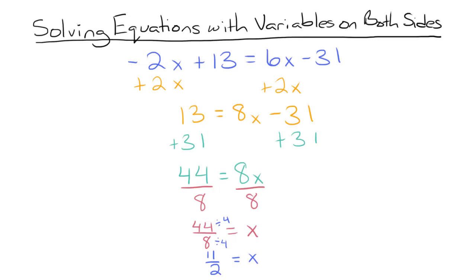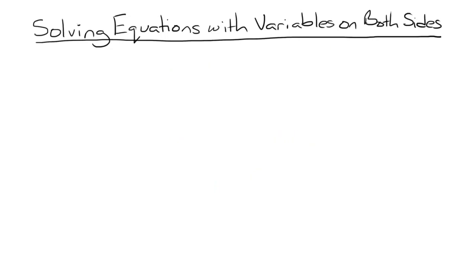Let's take a look at one more problem before we go. 4x plus 17 is equal to negative 9x minus 9. So first, we're going to add 9x to both sides.